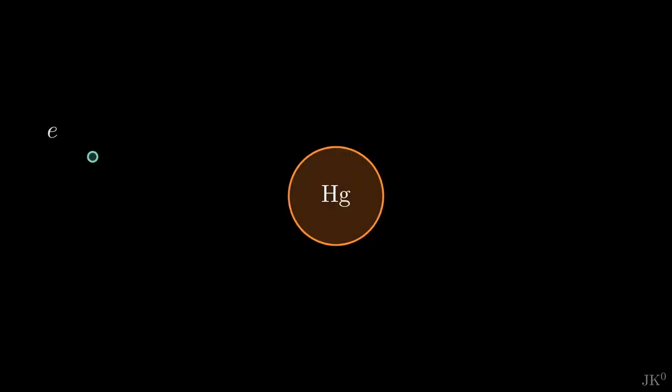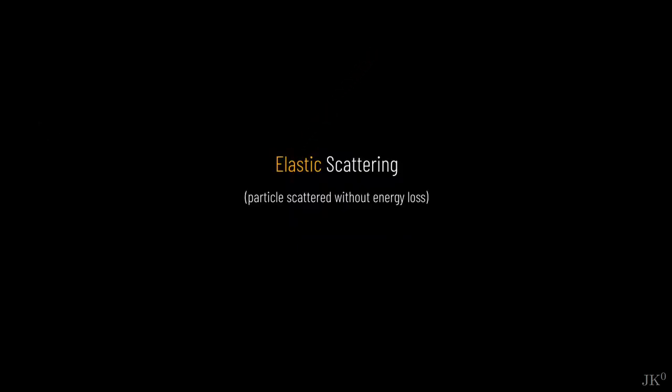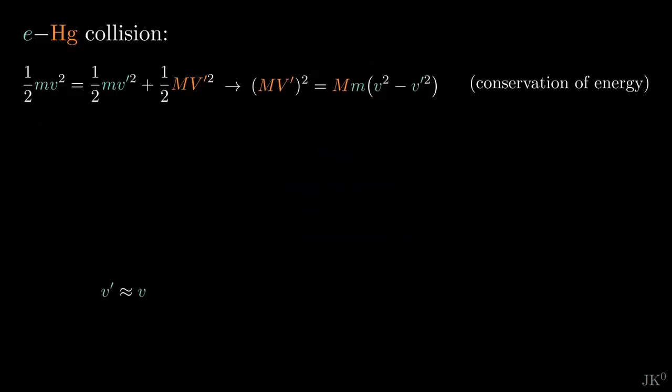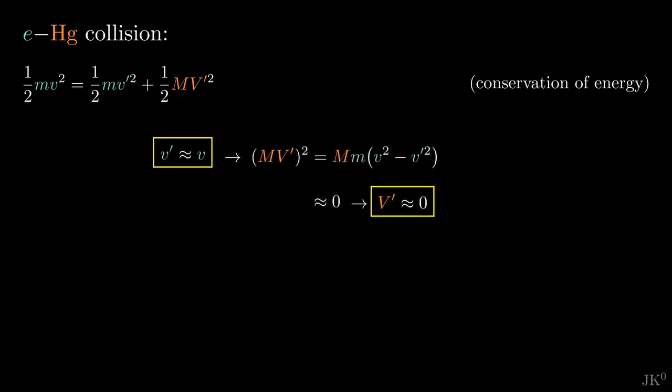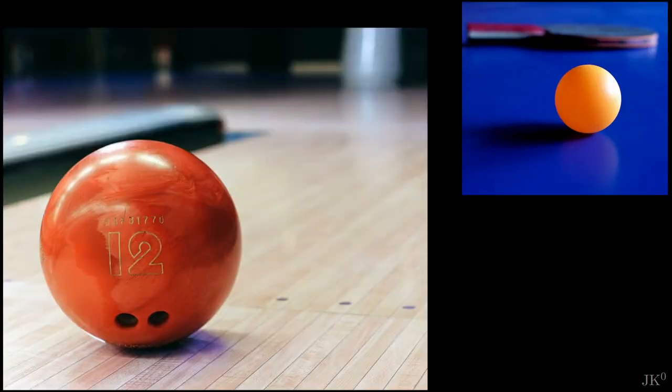This result means that the electron bounces in some direction, but without changing its speed. This type of collision is called elastic scattering. From the energy condition, we can directly see that the mercury atom remains at rest, which makes sense, because the atom is too massive. This collision can be visualized as a ping pong ball striking a bowling ball. The ping pong ball will bounce with the same speed, and the heavy bowling ball will not move at all.